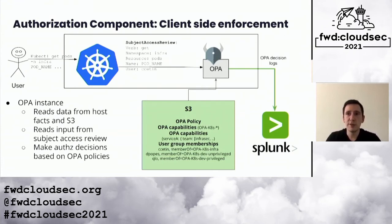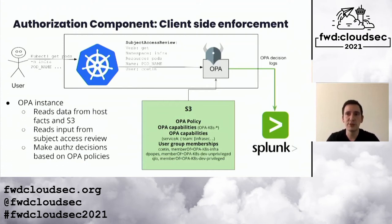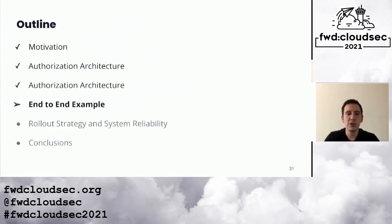OPA runs as a service on each Kubernetes host and is configured to pull from S3 to configure itself, as well as to listen on a websocket for any requests that come from Kubernetes. The input it gets from Kubernetes takes the form of a Subject Access Review, which contains all the information about the user's request. OPA then combines that with the data from the S3 bundle to make a decision. These decisions are then logged and written into Splunk.